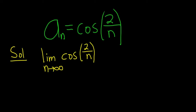So when n gets really big, 2 over n gets really close to 0. Think of it like this: 2 over 10 is 0.2, 2 over 100 is 0.02, 2 over 1,000 is 0.002.